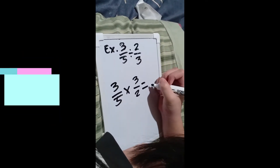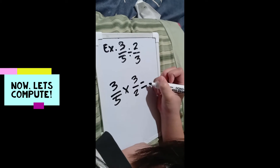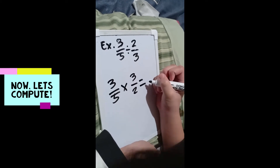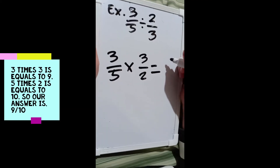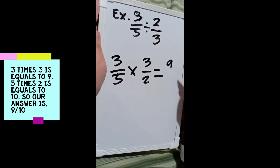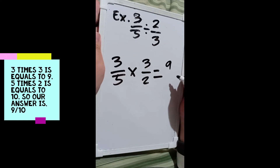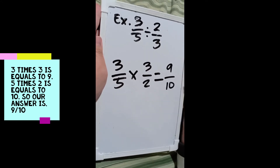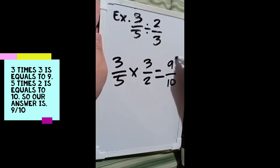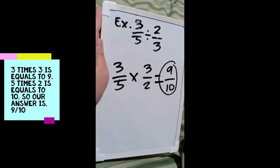Now let's compute. 3 times 3 is equal to 9, and 5 times 2 is equal to 10. So our answer is 9 over 10.